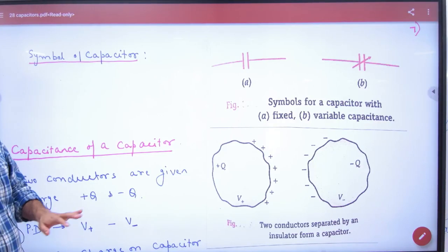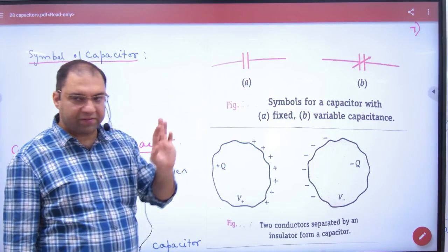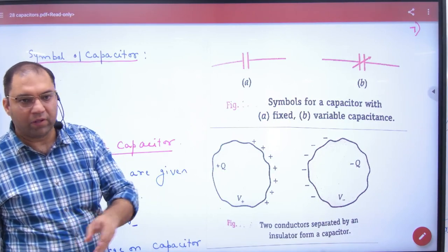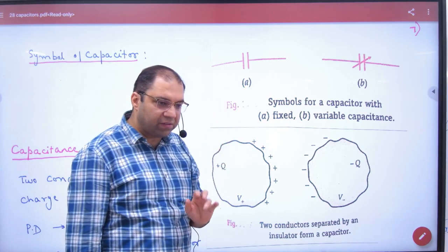Symbol of Capacitor. How is this symbol of capacitor? And if you make an arrow then it is a variable capacitor. It is a fixed capacitor.